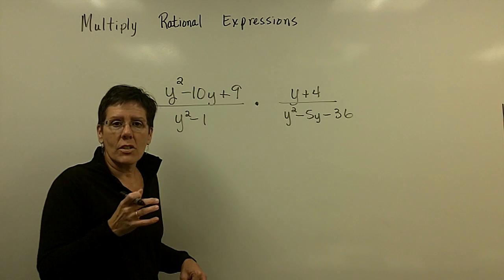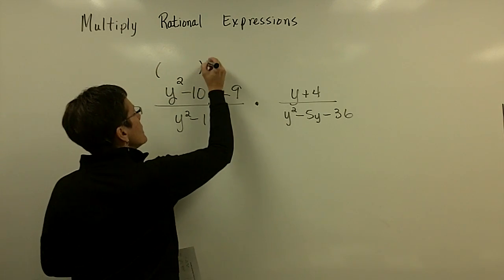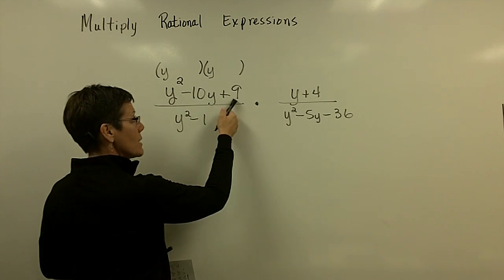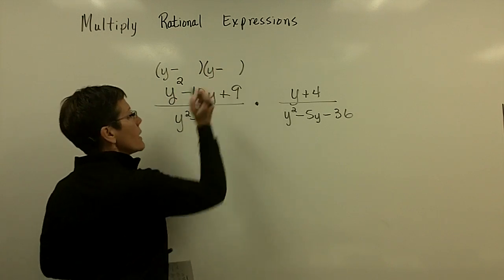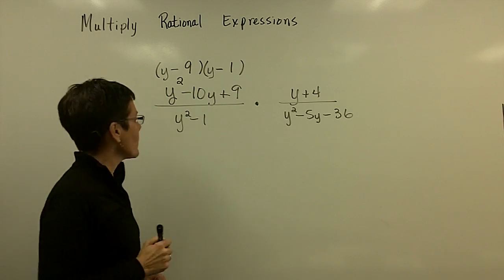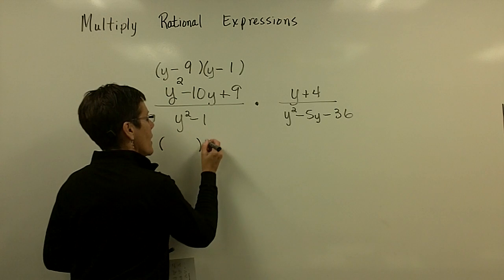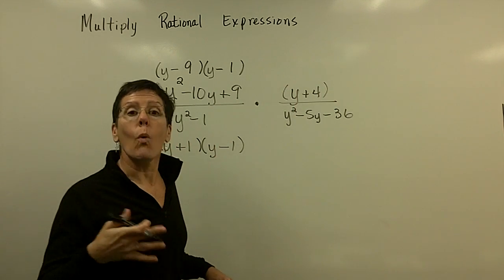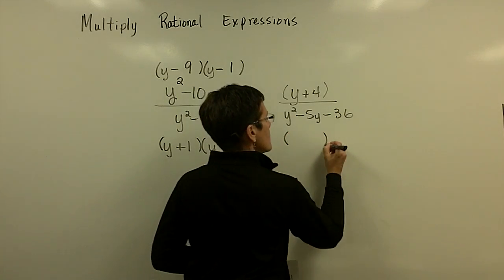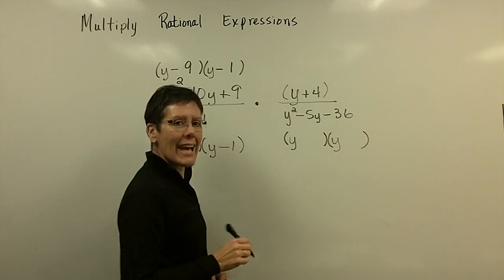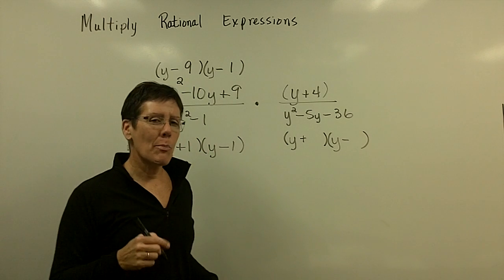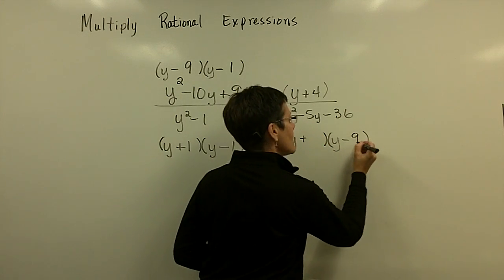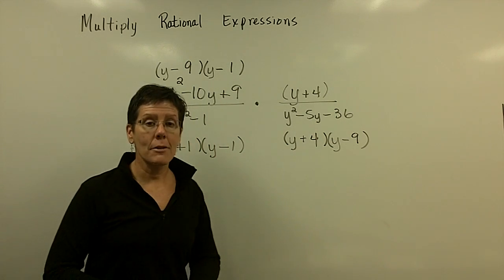Each piece is going to factor quickly. I'm looking for two numbers whose product is positive 9 — since there's just a 1 in front of the y squared term — yet they add to a negative number. Both better be negative: minus 9 and minus 1. Down here I have the difference of squares, which factors into y plus 1 and y minus 1. Over here it's just the binomial y plus 4. Then for the last denominator, I need two numbers whose product is negative 36 and adds to negative 5 — that's negative 9 and positive 4. Everything is factored.